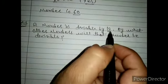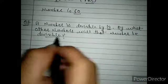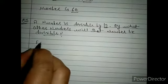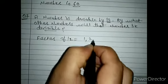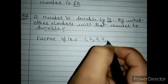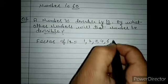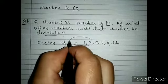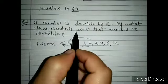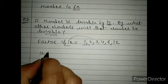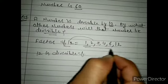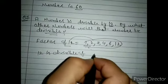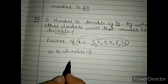Question number 7: a number is divisible by 12 — by what other numbers will it be divisible? Find the factors of 12: 1, 2, 3, 4, 6, and 12. Since it is divisible by 12, it will also be divisible by all these factors. I hope you will do this exercise with the given explanation. Have a good day.